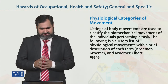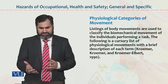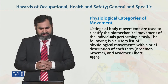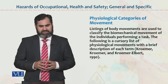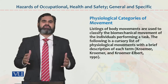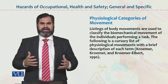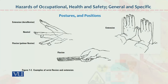Physiological movements with a brief description of each term. This is Chromer — Chromer and Chromer, Albert 1990 — who has done detailed study on biomechanical movements and how they can work in any organization. For example, this is the posture and position. On the right side is extension, left side is extension, and neutral.